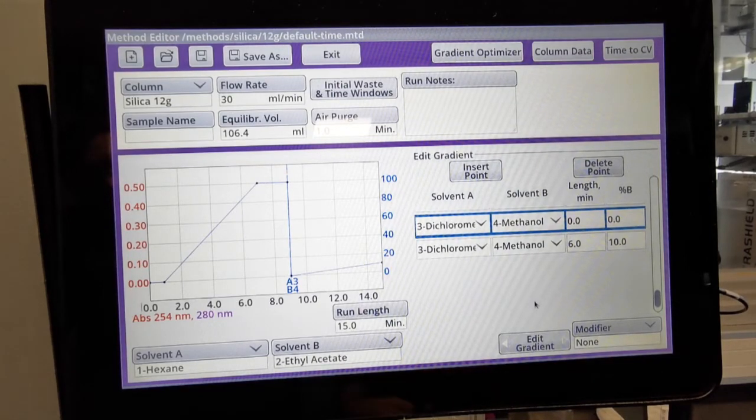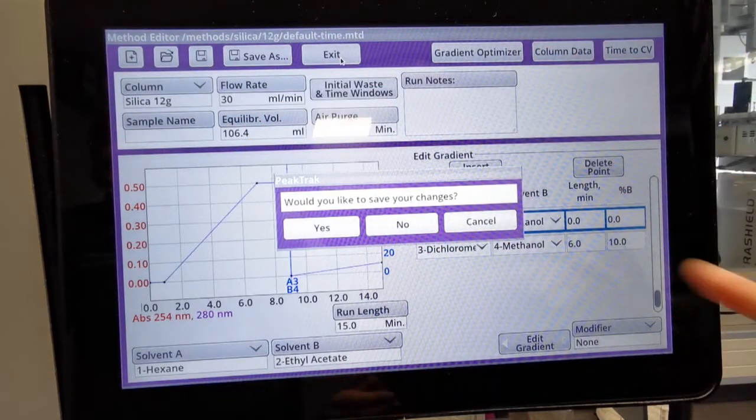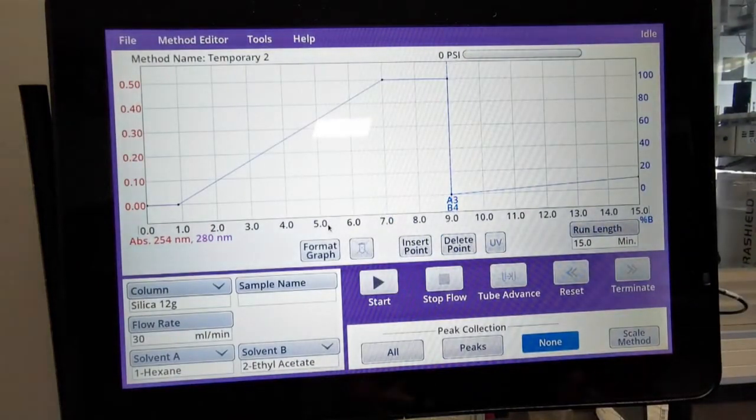Hit the exit button, it'll ask you if you want to save it, and then you're ready to start your run. So for those more tricky separations where you've got some closely eluting compounds, simultaneous gradients is a really good way of separating those out so you end up with the purest fraction of your compound of interest. Thanks very much for listening.